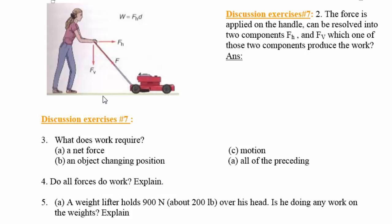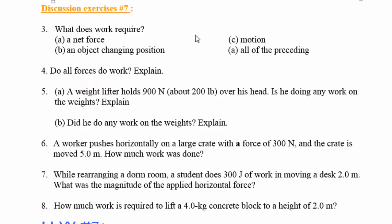Someone might ask: why isn't the vertical force doing work? The answer is because there is no movement in the vertical direction. The vertical force is countered by an equal and opposite force from the ground pushing upward against the mower, which cancels the vertical force.